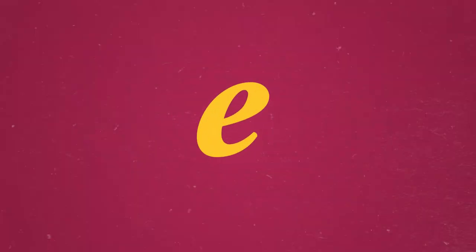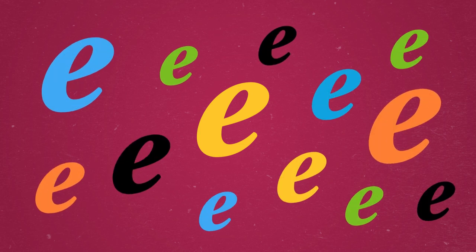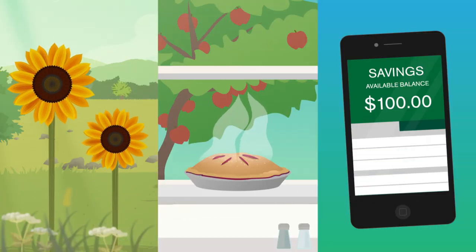Through the math goggles, we can see e is absolutely everywhere. The changes in height of sunflowers growing in the garden, the amount of heat lost by a pie cooling on a windowsill, the amount of interest accumulating in a savings account,